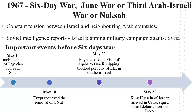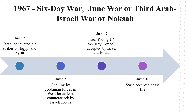There was constant tension between Israel and its neighbouring Arab countries, fuelled by Soviet intelligence reports indicating Israel was planning a military campaign against Syria. The President of Egypt mobilized forces in Sinai on May 14th, 1967. On May 18th, he requested the removal of UN emergency forces stationed there. On May 22nd, he closed the Gulf of Aqaba to Israeli shipping, instituting an effective blockade of the port city of Eilat in southern Israel. On May 30th, King Hussein of Jordan arrived in Cairo to sign a mutual defence pact with Egypt. On June 5th, Israel conducted air strikes on Egypt and Syria. Jordanian forces began shelling West Jerusalem, which faced a counterattack by Israeli forces on the same day. The UN Security Council called for a ceasefire on June 7th, immediately accepted by Israel and Jordan, and by Syria on June 10th.